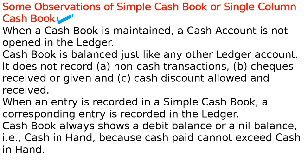When a cash book is maintained, a cash account is not opened separately in the ledger, because the cash book itself serves as the cash account. Cash book is balanced just like any other ledger account. It does not record non-cash transactions — only cash transactions are recorded in it.